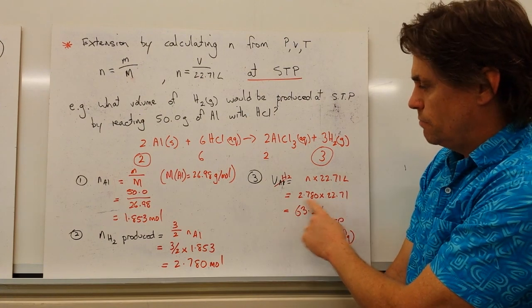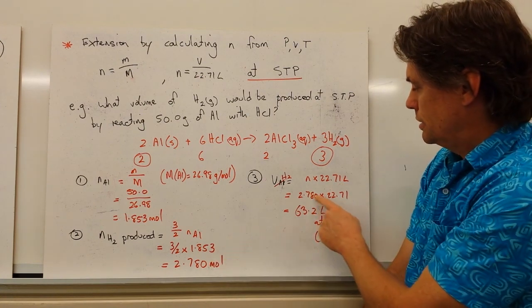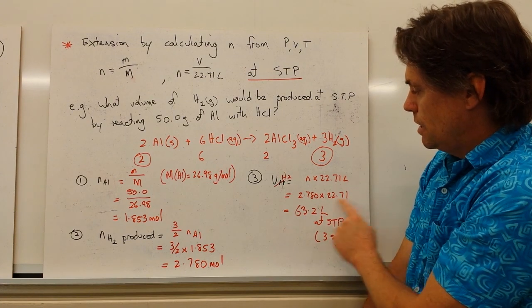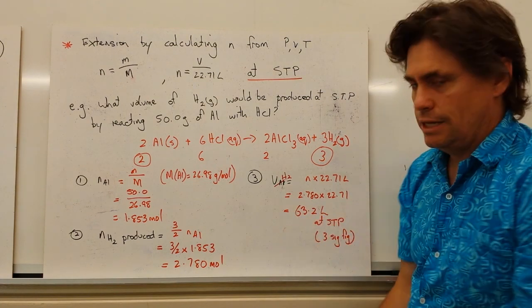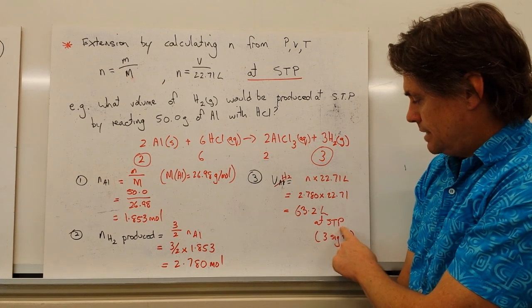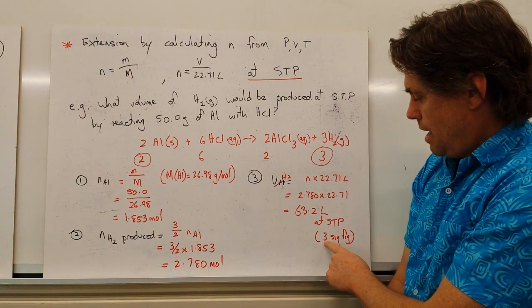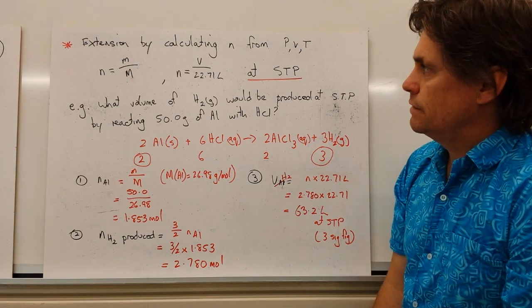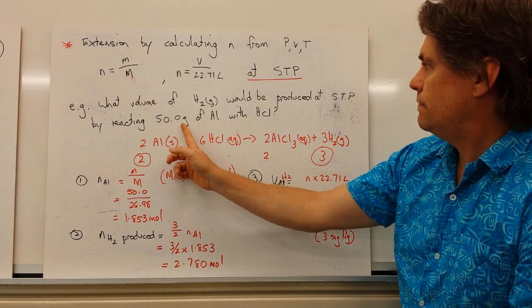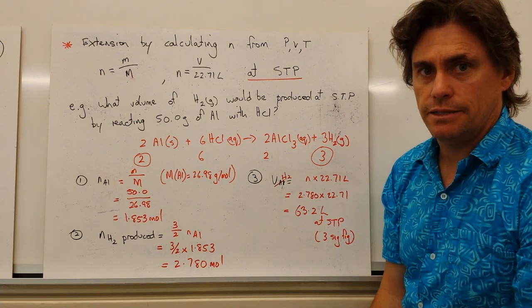So putting the number of moles of hydrogen being produced by our molar volume, we get 63.2 litres at STP, which is determined before. And we've also given this to three significant figures. We've got three significant figures here. We have three significant figures in our answer.